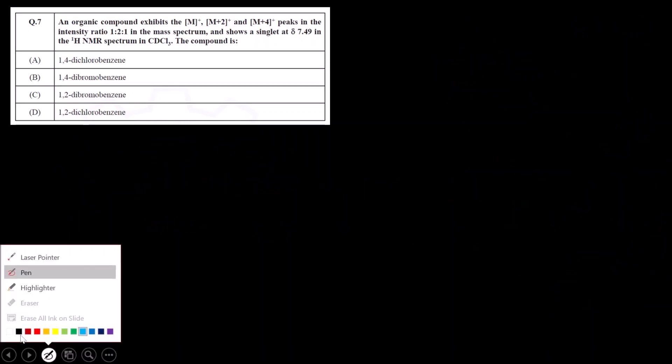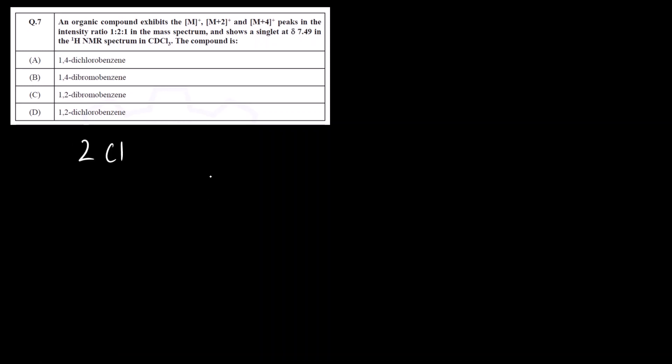Now suppose we will do a revision. Suppose two chlorine groups are present, then how do you find out the intensity ratio? There will be three isotopes - one will be M+ peak, M+2 and M+4. This is the molecular ion peak, this is isotopic peak and M+4 is also isotopic peak. How do you find out? For Cl there are two isotopes: one is 35Cl and another is 37Cl. What is the intensity ratio? Three is to one. So if there is 35Cl we write 3, 37Cl we write 1. M+ means mass of both the isotopes will be same - 35Cl and the other chlorine also we will take 35Cl.